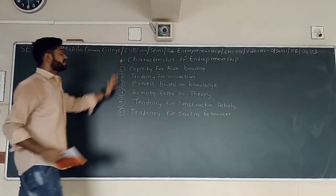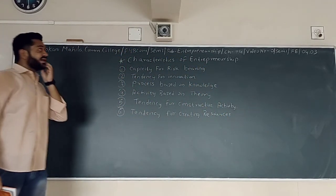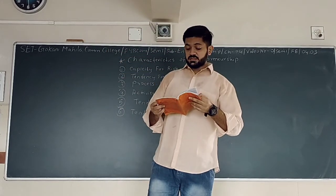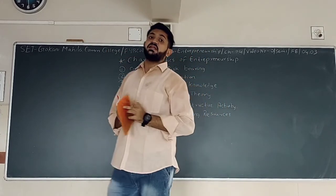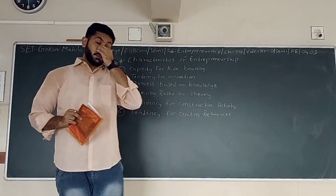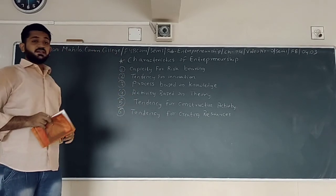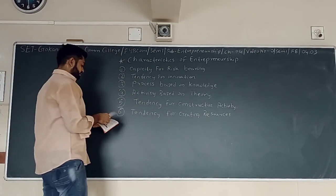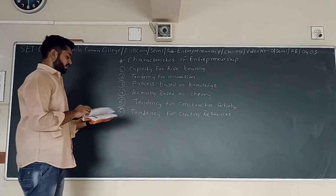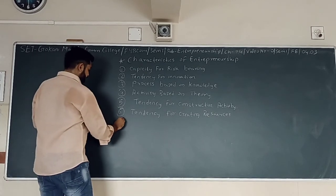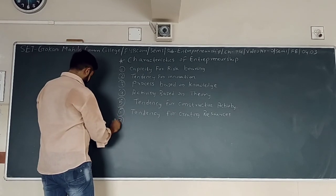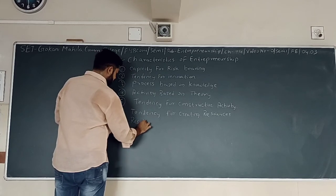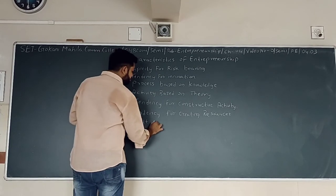So these six characteristics we have completed. The total number of characteristics is up to 17. We will start with characteristic number seven. Characteristic seven is: result of change.